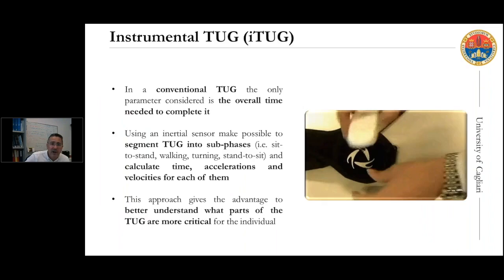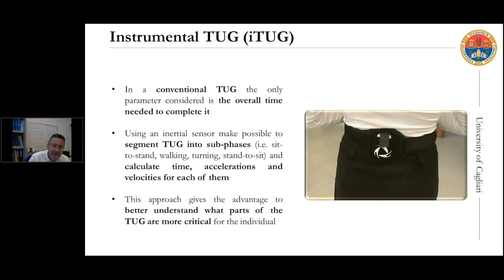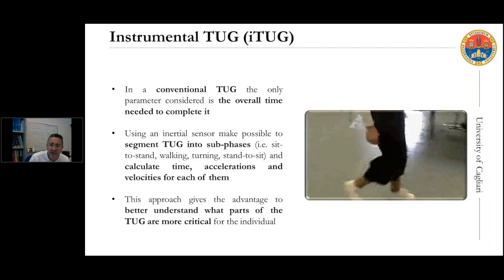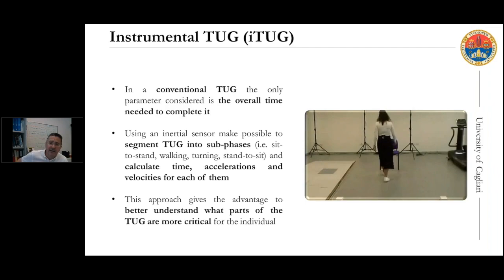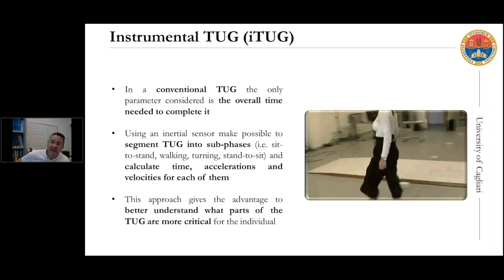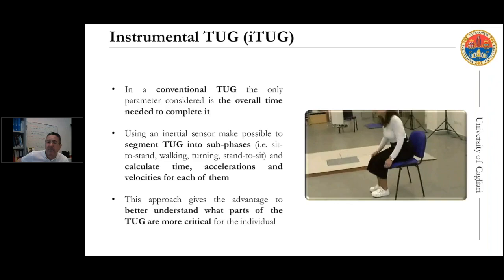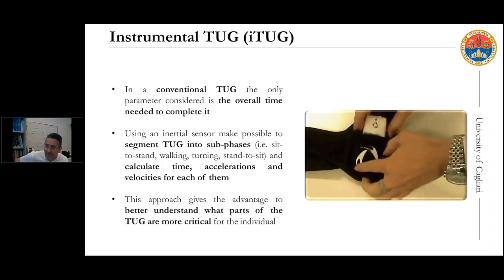As shown in the video, the test is very simple: you place the sensor on the lower back, similarly to what was previously seen for gait analysis, and perform the classical Timed Up and Go. Using the inertial sensor, you can segment the TUG into sub-phases — discriminating seat-to-stand, walking, first, intermediate, and final turning, and stand-to-seat — obtaining information about the time, acceleration, and velocity for each sub-phase.